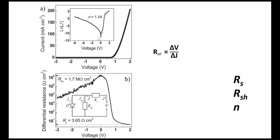From the IV curve itself, you plot differential resistance — dV/dJ — as a function of voltage. The maximum of this plot gives the series resistance value, and the minimum gives the shunt resistance value. That is how parameters like shunt resistance, series resistance, and diode ideality factor are calculated for a solar cell material.